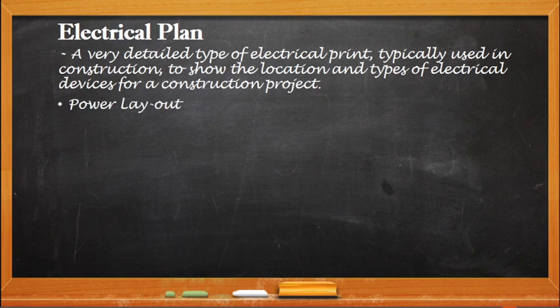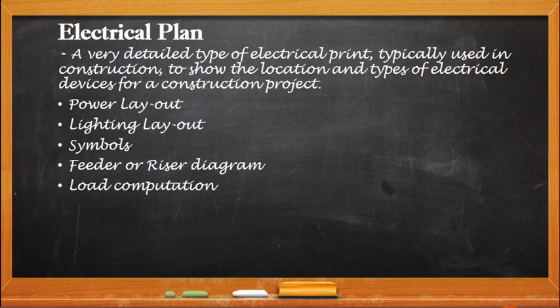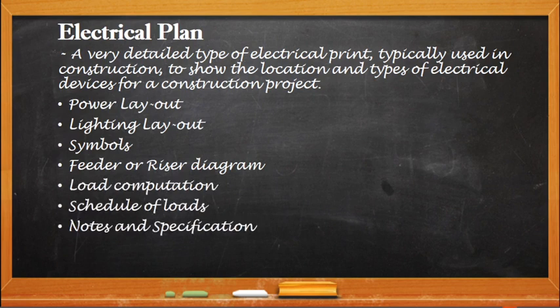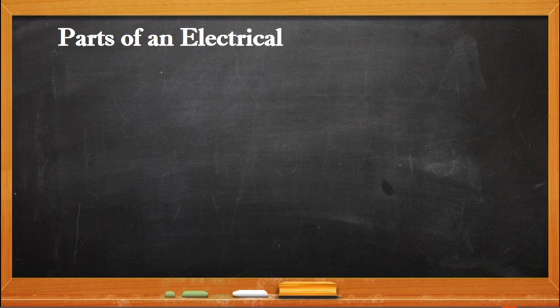The electrical plan will contain the following: the power layout, the lighting layout, the symbols, the feeder or riser diagram, the load computation, the schedule of loads, the notes and specification, the location or site plan, and the nameplate. So we have here the parts of an electrical plan, or the contents of it.